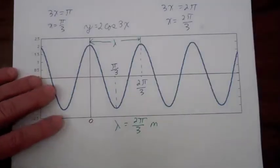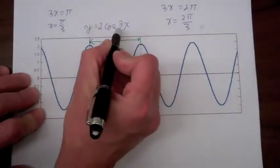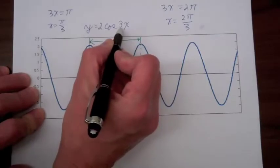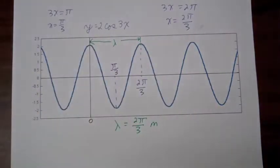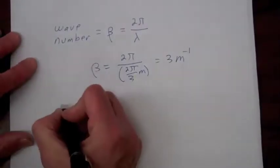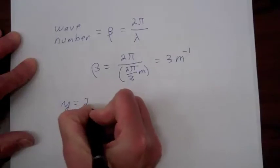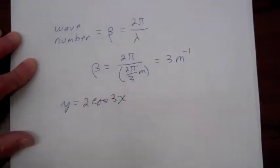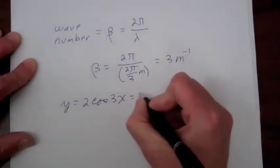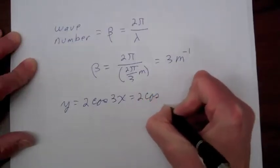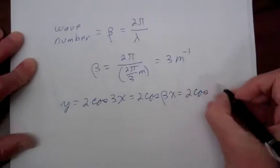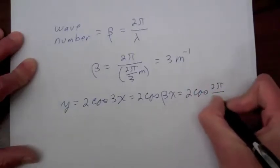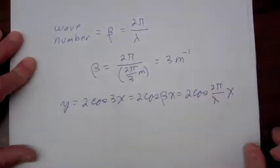The number in front of x here will be the wave number for our wave. So we can rewrite our wave as y = 2cos(3x), which is 2cos(βx), or 2cos(2π/λ · x).